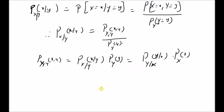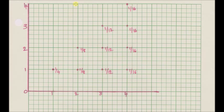Next, we will look at an example illustrating the conditional probability mass function. Given the following joint probability mass function P_{X,Y}(x,y), where the random variable X has values from 1 to 4 and the random variable Y has values from 1 to 4, the dots show the joint PMF values. We can clearly see that the joint PMF is uniform for a given value.